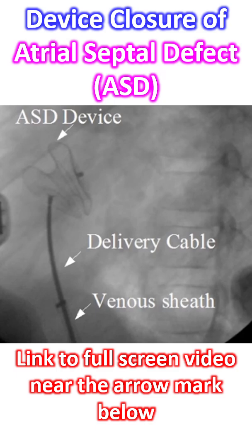Position is confirmed by transesophageal echo, with special care to see that the device does not interfere with the function of the AV valves. Once everything is fine, the device is released by unscrewing the delivery cable. An unstable device can occasionally get dislodged either into the left or right atrium.